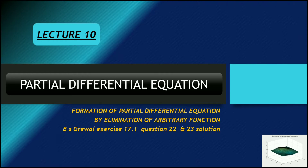Questions 22 and 23 are based upon the φ(u, v) = 0 theory. This theory is covered in lecture 5 of this series on Partial Differential Equations, previously uploaded on this channel. Go to lecture 5 and read the theory so you can easily solve the problems related to this exercise.